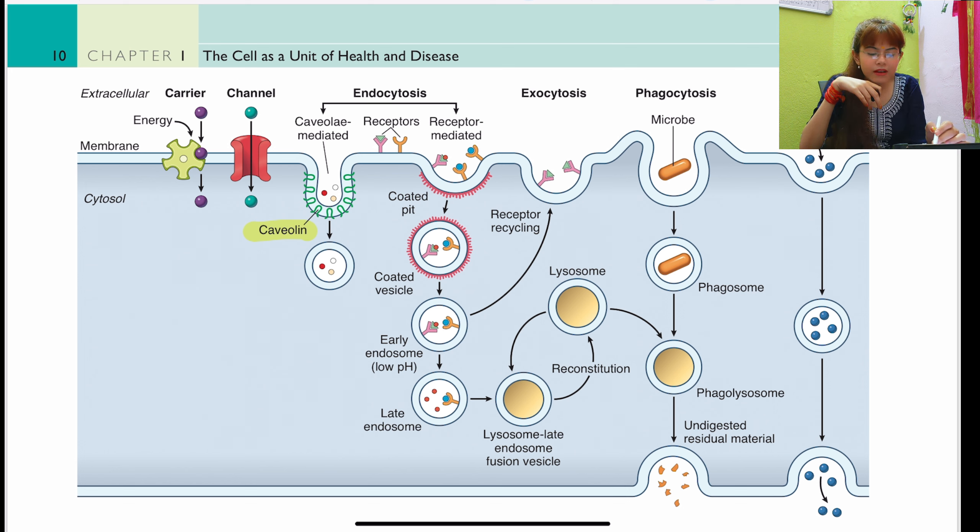Anchoring junctions are the adherens junctions and desmosomes — these terms are the same thing. A critically important MCQ concept: loss of the epithelial adherens junction protein E-cadherin explains the discohesive invasive pattern seen in some gastric cancers and lobular carcinoma of the breast. E-cadherin is an adherens junction protein, and its loss is associated with anchoring junctions — not occluding junctions.